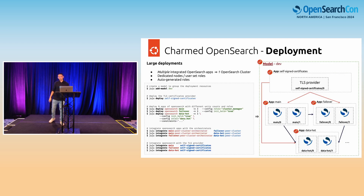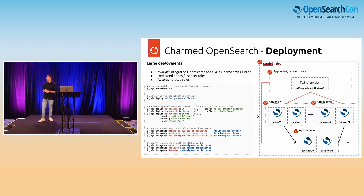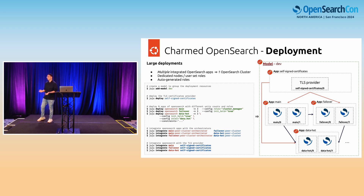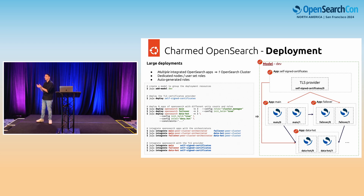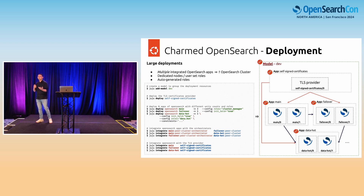For more complex deployments where you want a diverse topology — dedicated nodes per role or different constraints — for example machine learning nodes with GPU-specific instance types or cluster manager nodes on cheap T2 small instances — the design shifts from managing units to managing blocks of homogeneous unit entities. If you want to deploy coordinating nodes, deploy them as an application and scale that application independently from cluster manager, data, or machine learning applications. This simplifies the governance model of such a cluster.